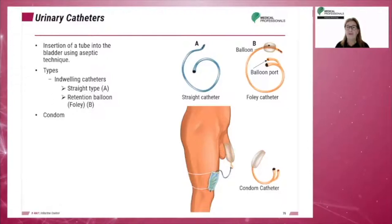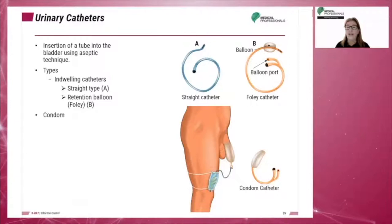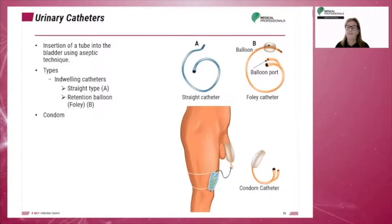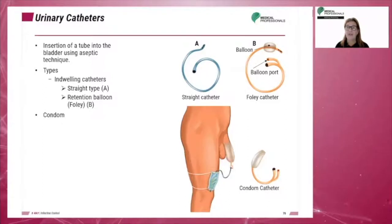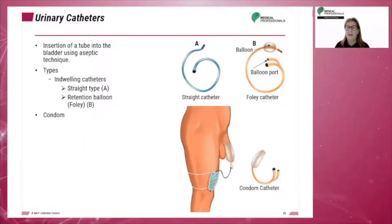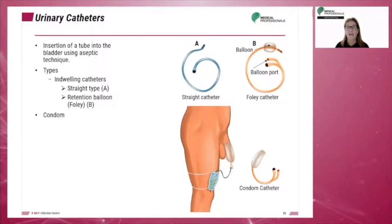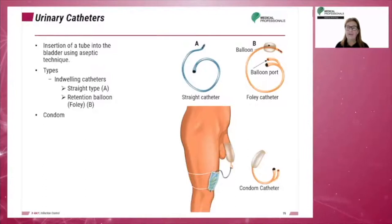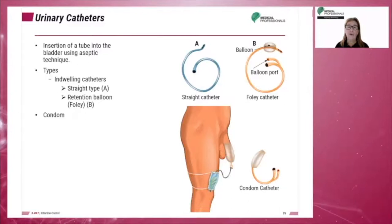Straight tip catheter tubes are used to obtain a specimen or empty the bladder and can easily be inserted and removed. Balloon tip catheters can be left in place to allow continuous drainage of urine. They have an inflatable balloon at the tip to prevent accidental removal. For example, the Foley catheter has a balloon tip that can be filled with sterile water to hold the catheter in place.